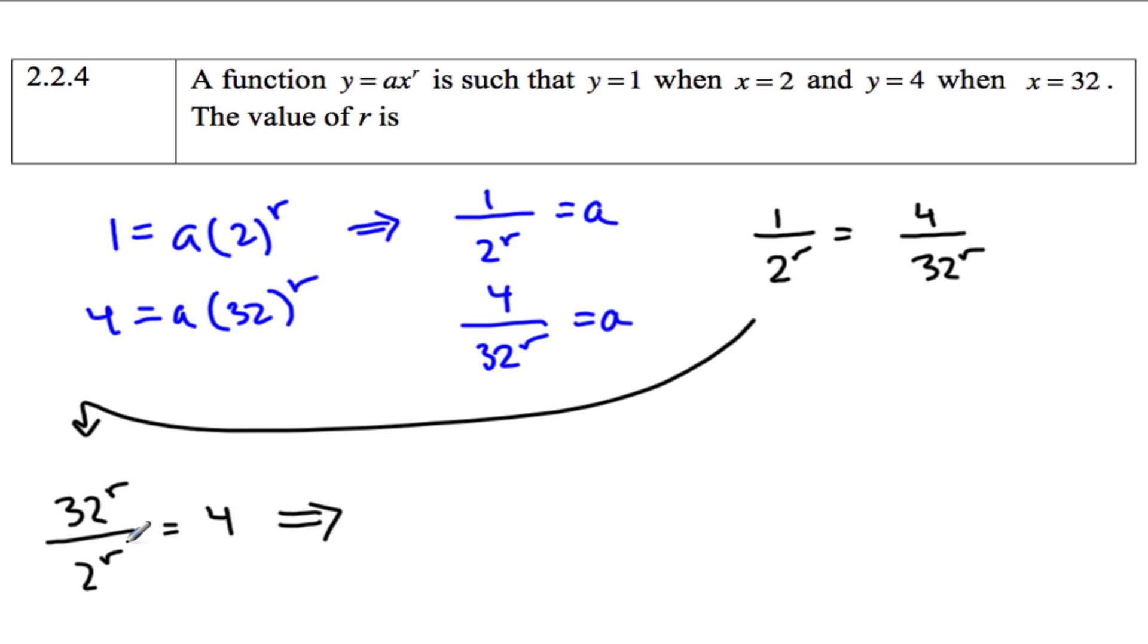And then I'll express 32 to the r as something with a base 2. So 32 is 2 to the 5th to the r over 2 to the r, which equals 4.